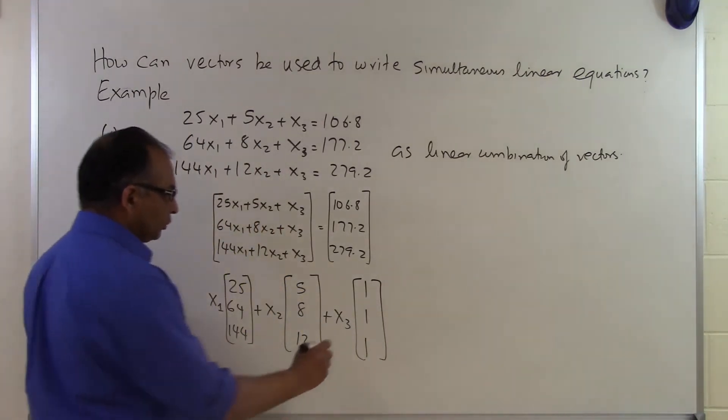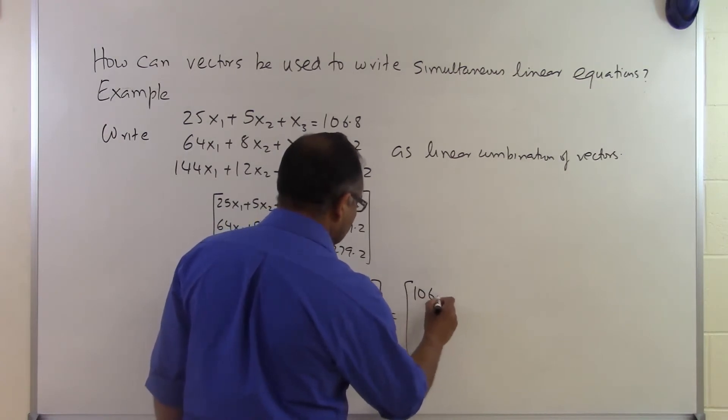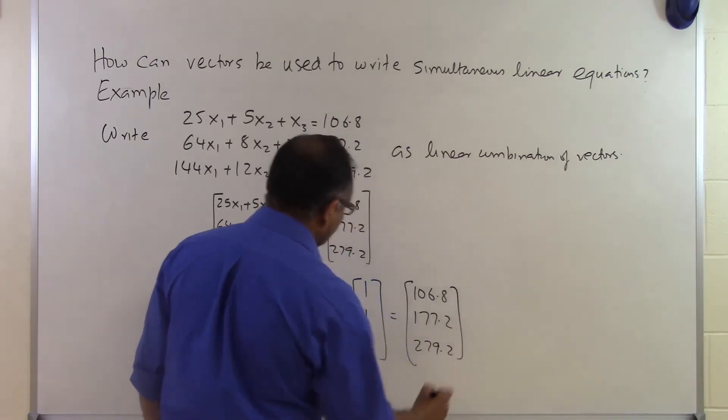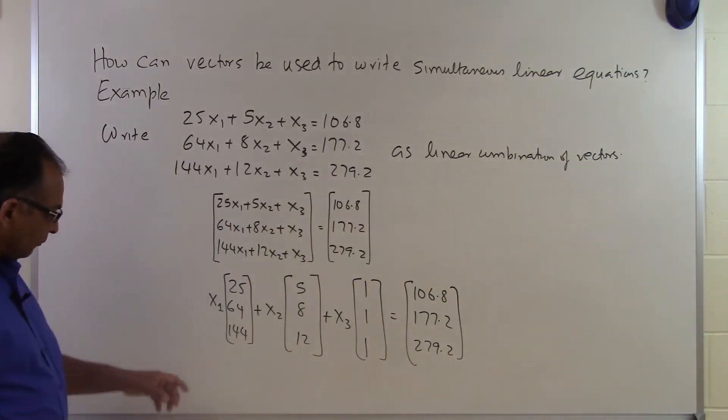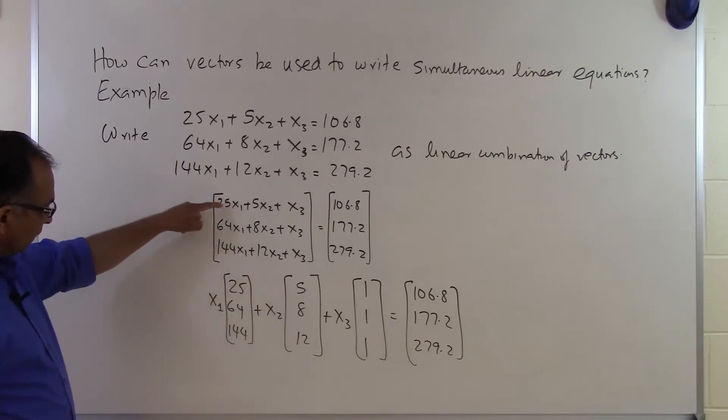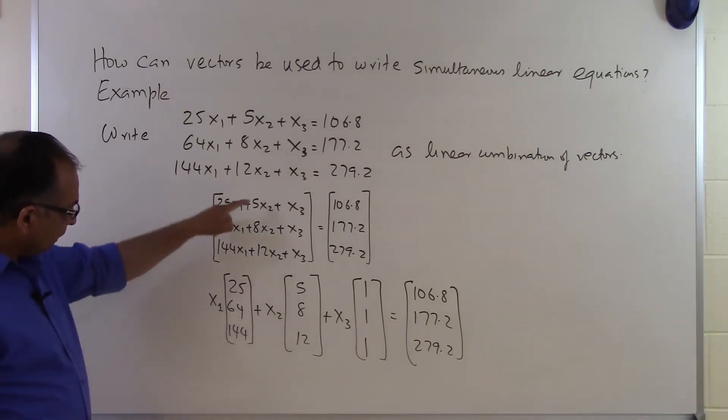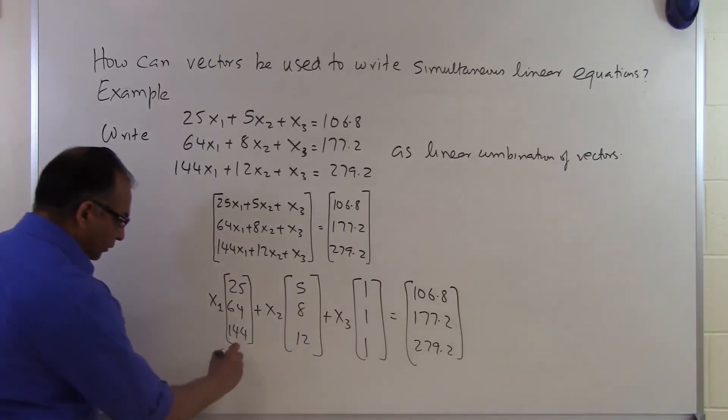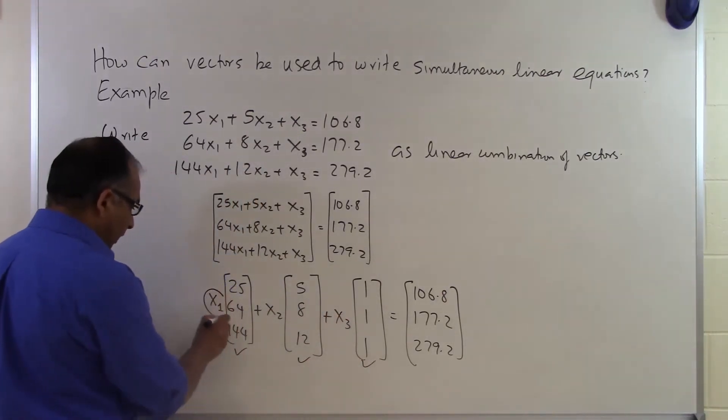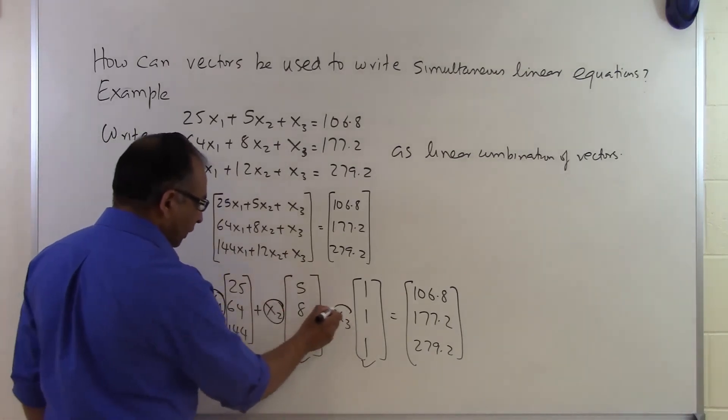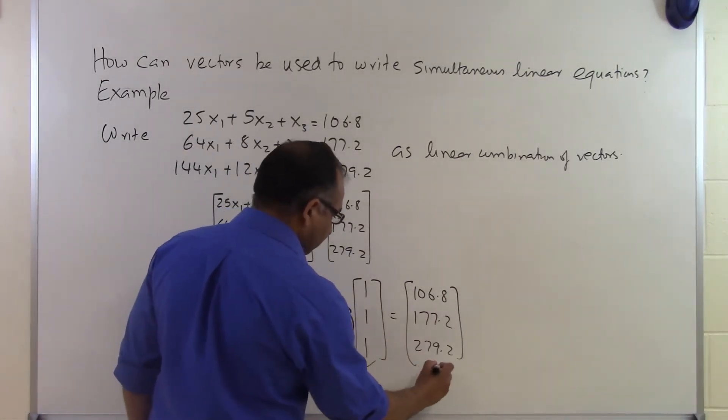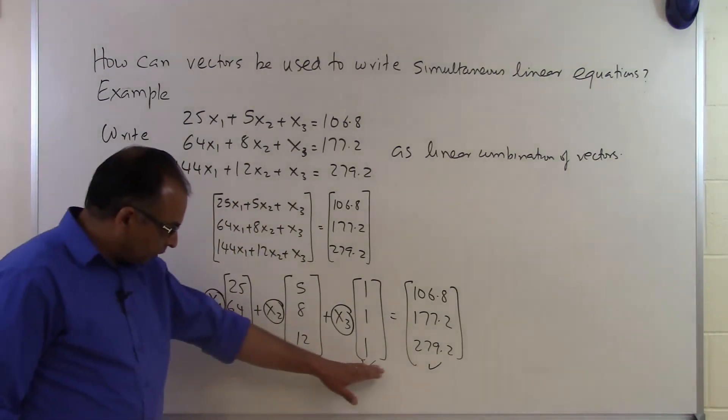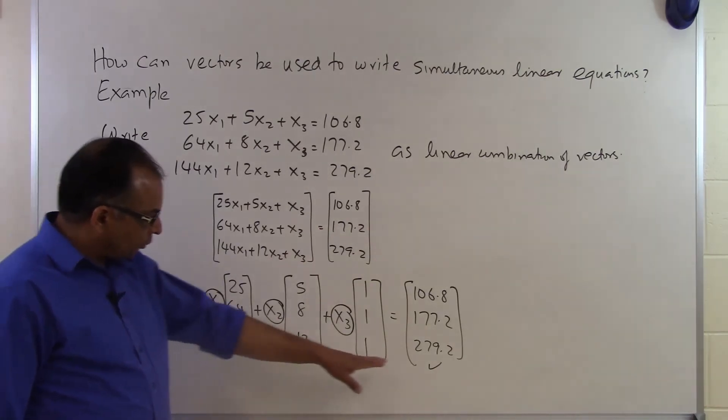And that will be equal to 106.8, 177.2, and 279.2. So now what I have done is that I have taken three vectors—these three numbers, these three numbers, and these three numbers which are 1, 1, 1—multiplied by some scalars x1, x2, and x3, and it equals another vector which is given right here. So that's how I have written these equations as a linear combination of three vectors equal to another vector.